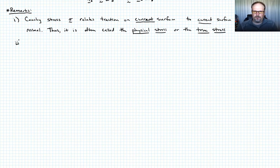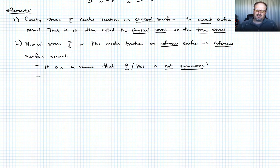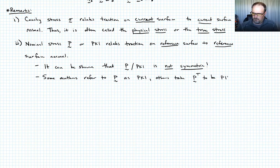Number two. The nominal stress P or pK1 relates traction on the reference surface to the reference surface. A couple things that you should be aware of about this nominal stress P is that it can be shown that P or pK1 is not symmetric. So you've always thought of the Cauchy stress as symmetric and it is. The nominal stress or pK1 is not.